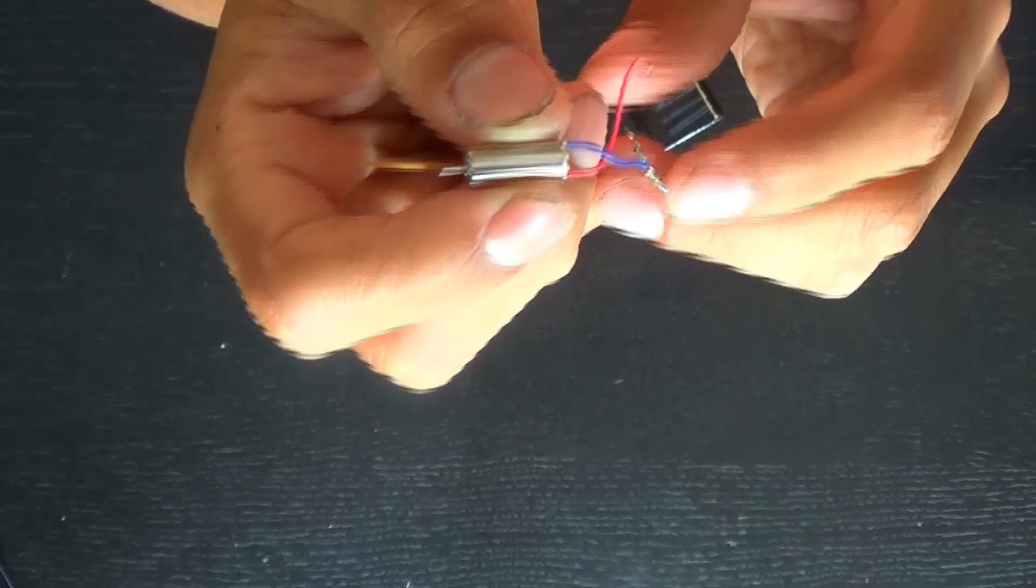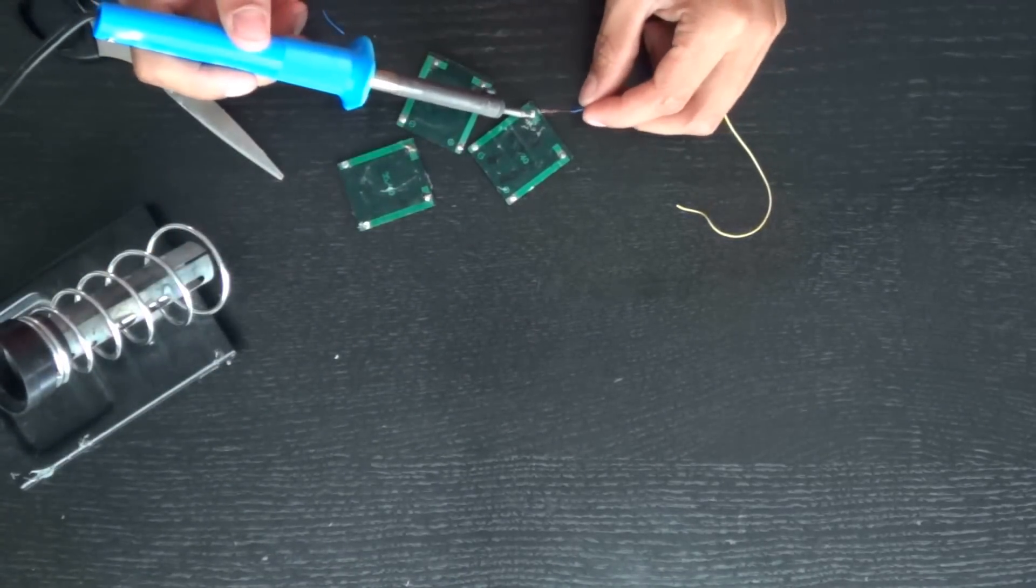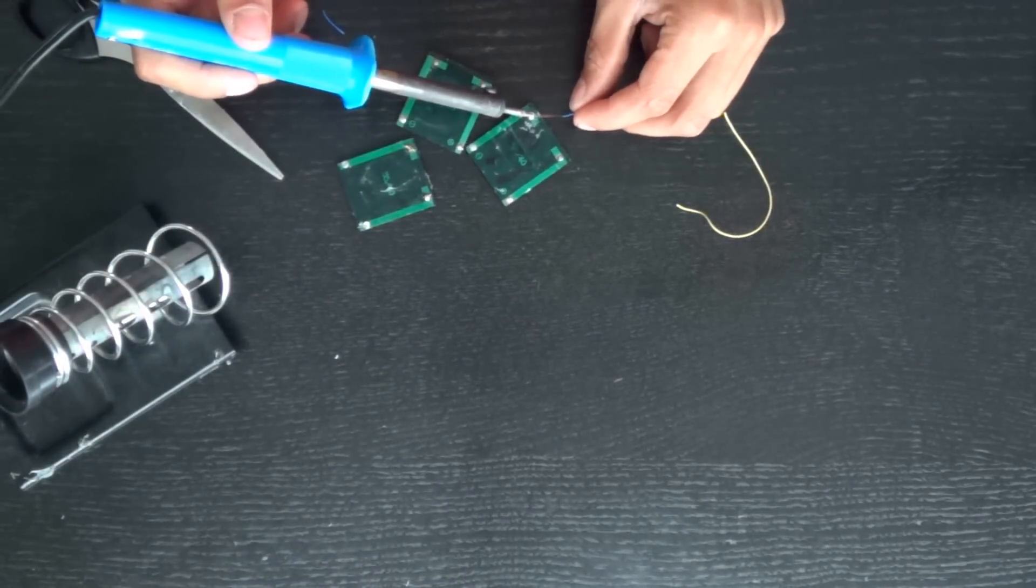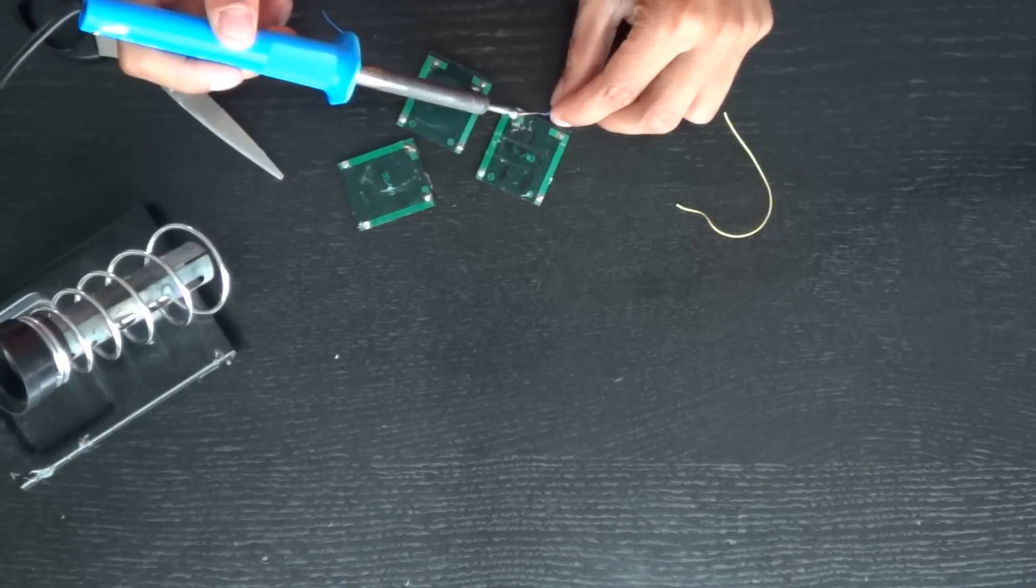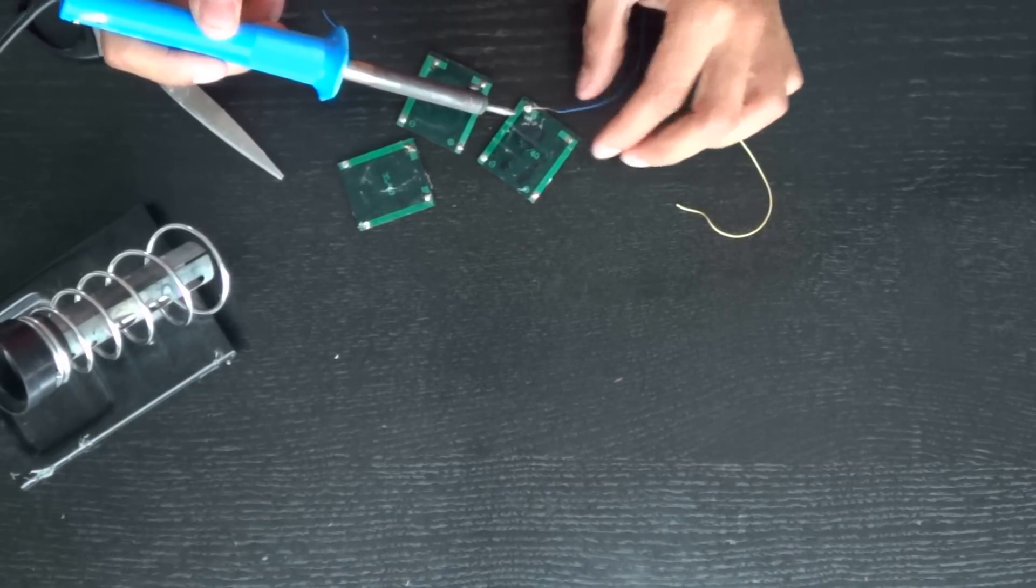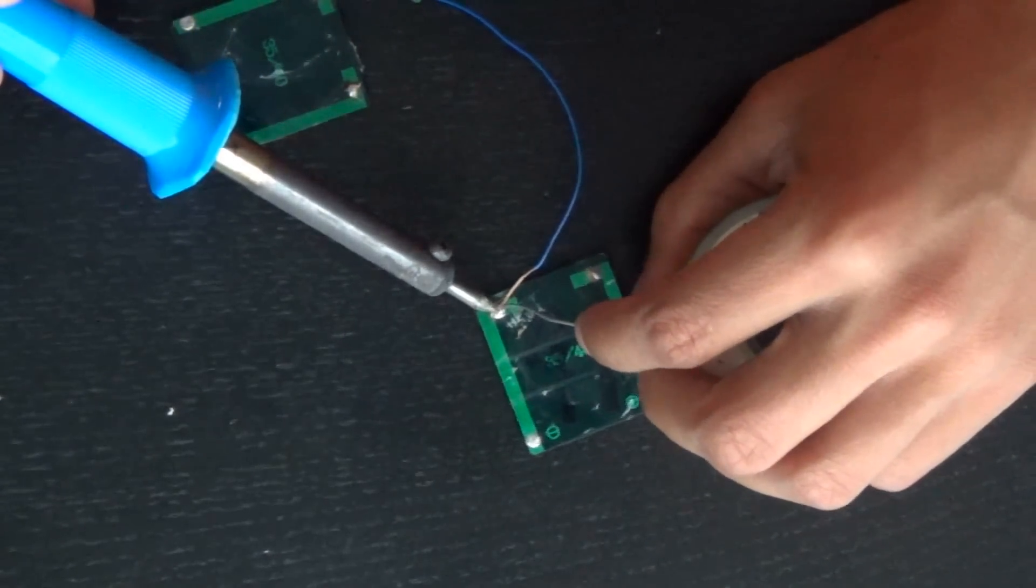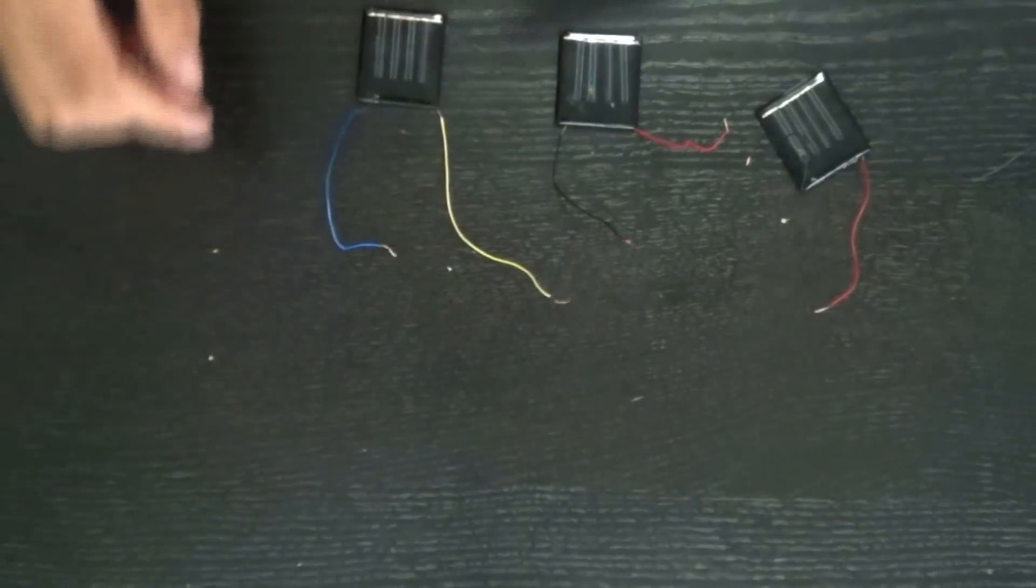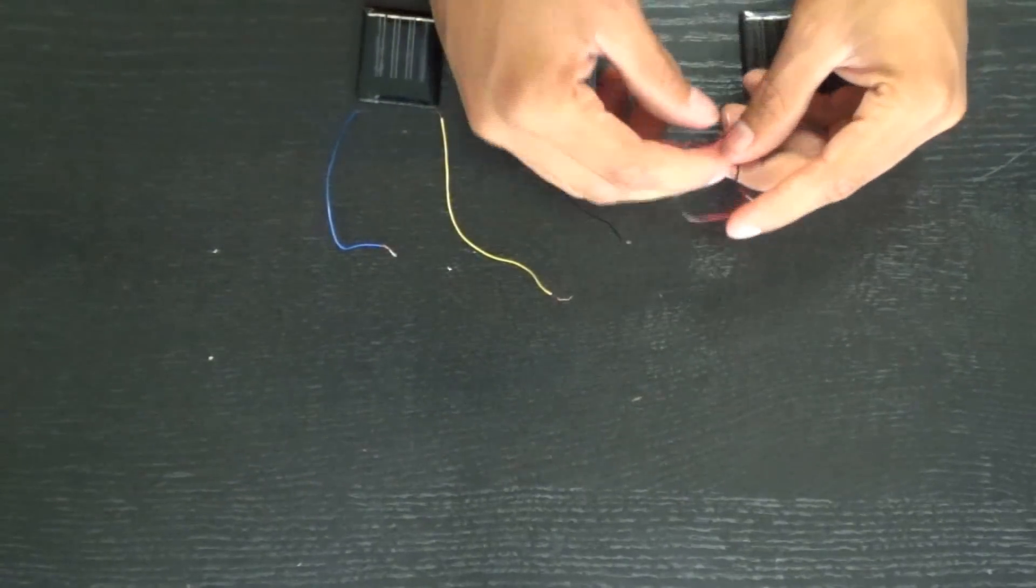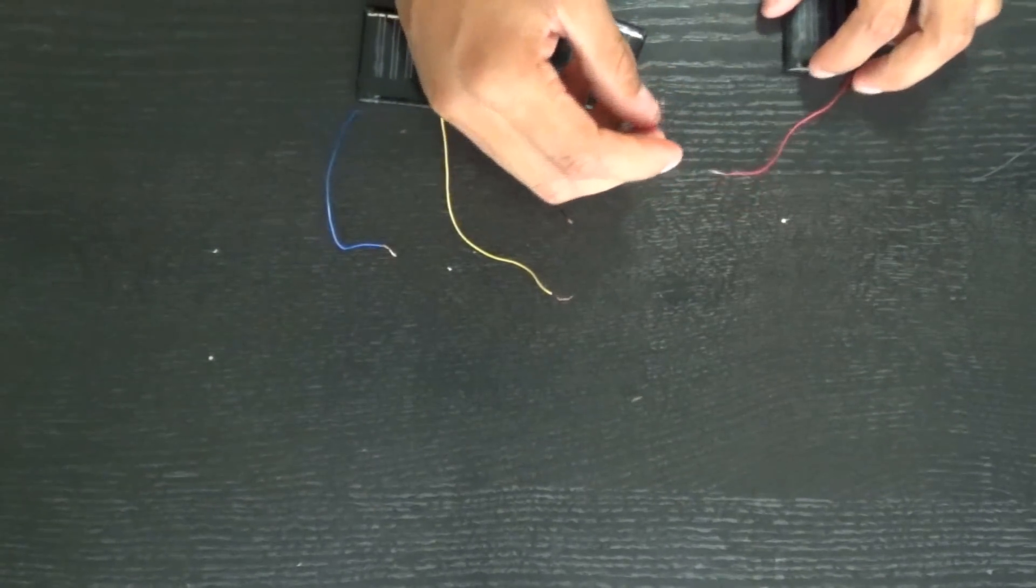We're going to start off by soldering wires onto the solar panels. The wires that were on my solar panels I'd accidentally ripped off, so we're going to solder wires onto the positive and negative ends of all the solar panels.